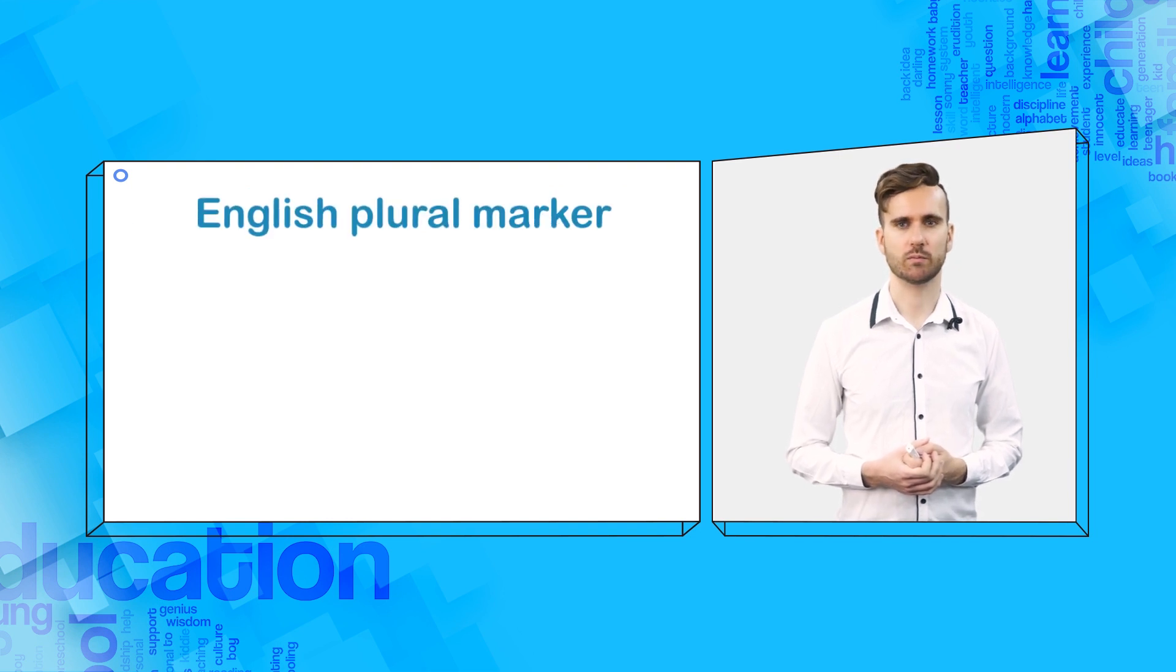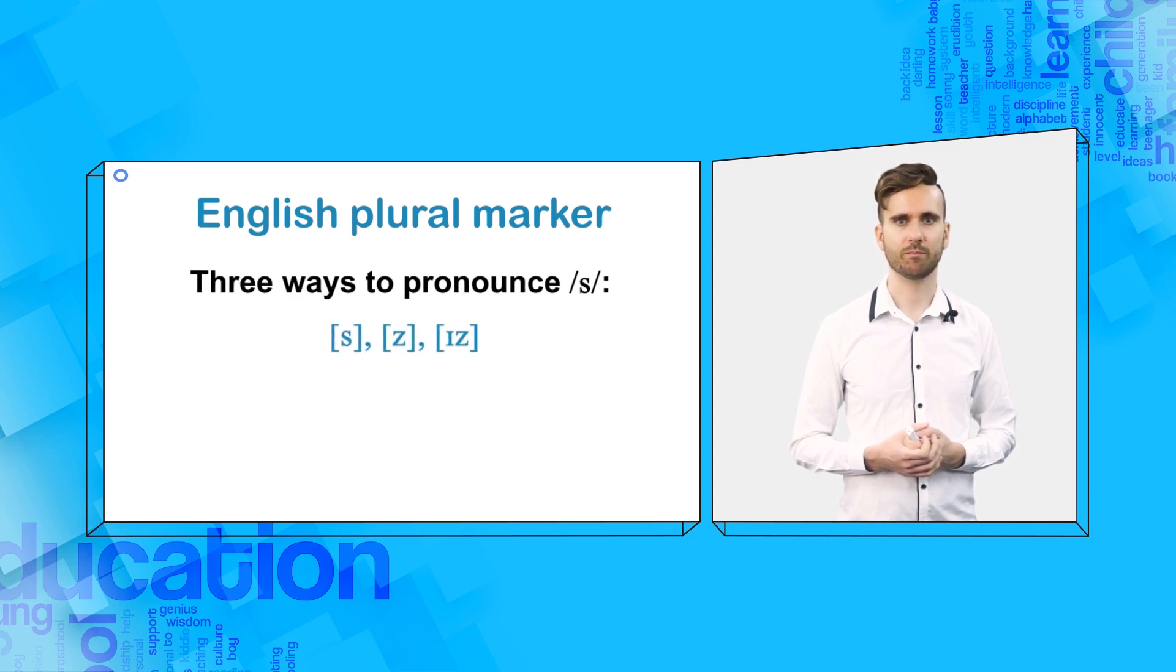Here is one more example. The English plural marker. Most of the time, we add s to a noun to make it plural. However, there are actually three different ways to pronounce the plural marker s. And which form is used depends on the phonetic environment. The three allophones are [s], [z], and [ɪz].